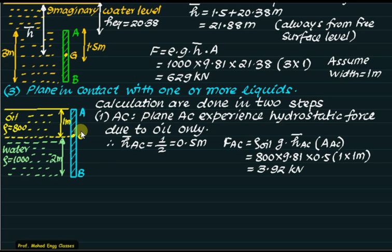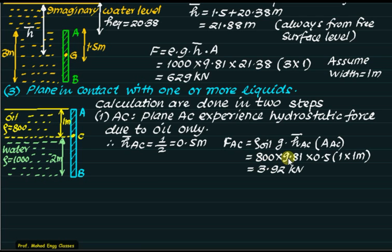First, we calculate the hydrostatic force on AC, which experiences force due to oil only. The oil column is 1 meter, so the centroid of AC is at 0.5 meters. Force on AC = density × g × h-bar_AC × area_AC = 800 × 9.81 × 0.5 × (1 × 1) = approximately 3.92 kN, assuming width = 1 meter.